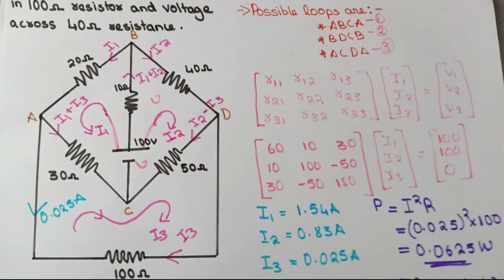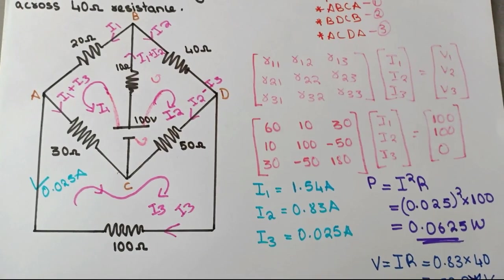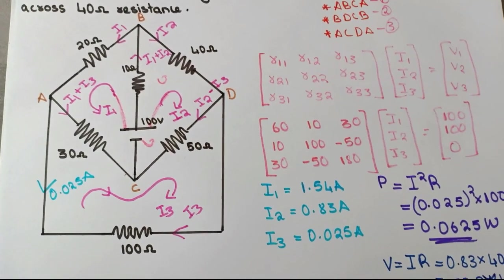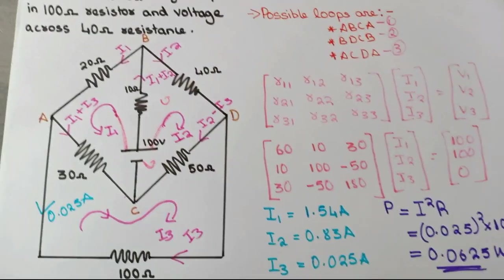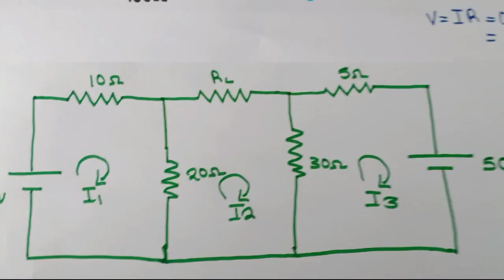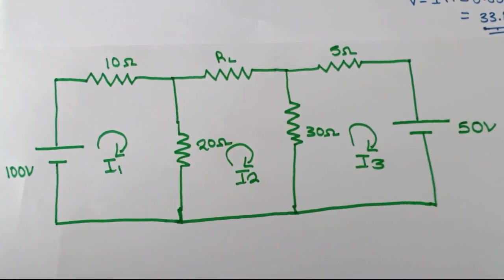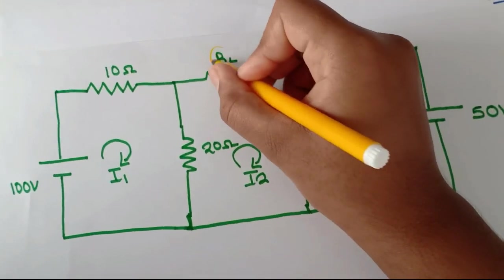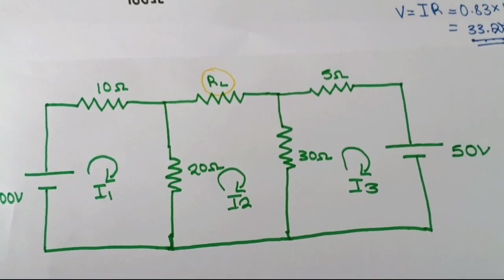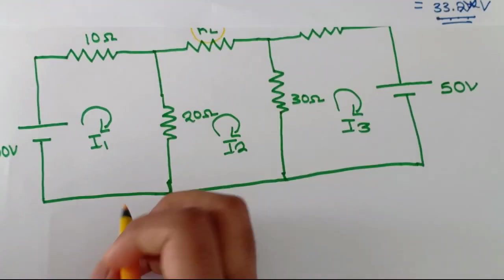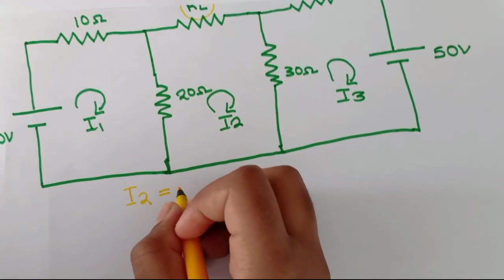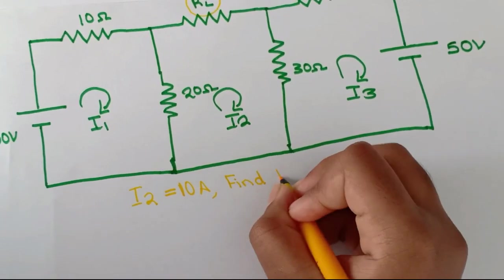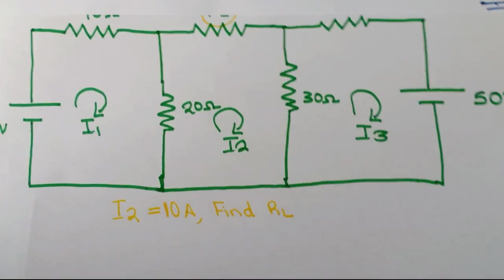When you look at the diagram you might think it's so difficult, but when you actually try the problem it's easy. Now here is another model question that can come in exams. The current directions I1, I2, I3 are given, and you have to find the value of RL. For example, they give I2 = 10 amperes and you need to find RL.